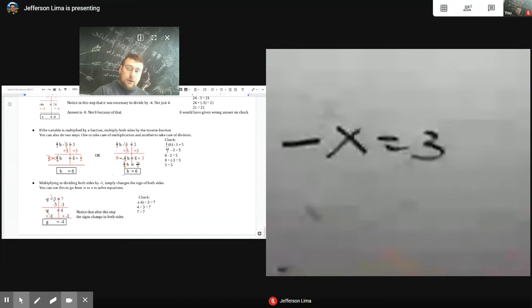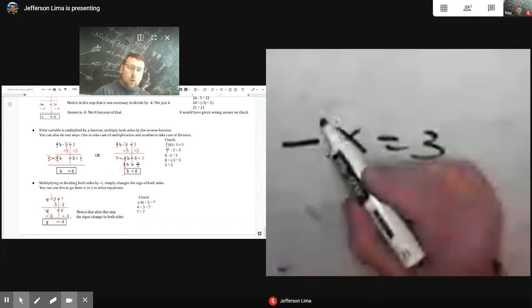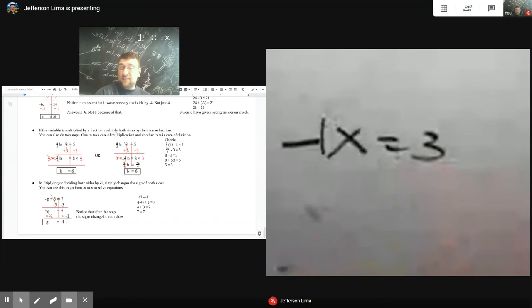But remember, when there's not a number there, there's really a 1 there. And so this is really negative 1x equals 3. So how do you get rid of that negative 1? Well, it's multiplying the x. So you divide both sides by negative 1.